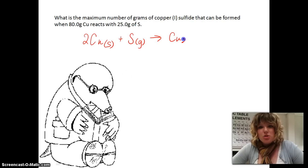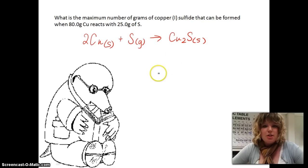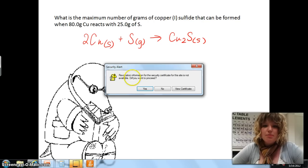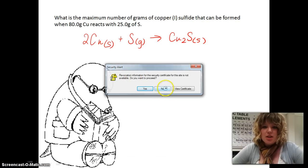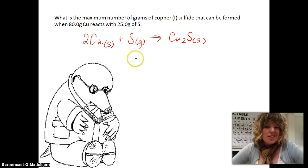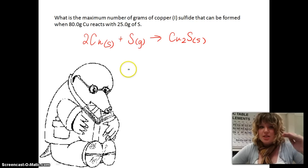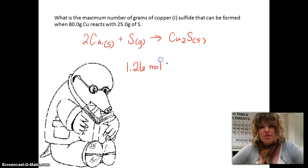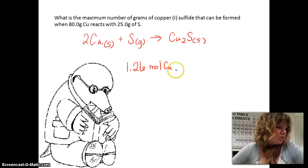So we have copper 2 sulfide, it's a solid, it's all balanced, we're ready to go. And what you do here is you're just going to use your mole ratio. So you would have to calculate the moles again, but since we did it just in the last problem, which a lot of times these are stack problems, so don't calculate it all over again, just use the information from the above problem. So we know we have 1.26 moles of copper.